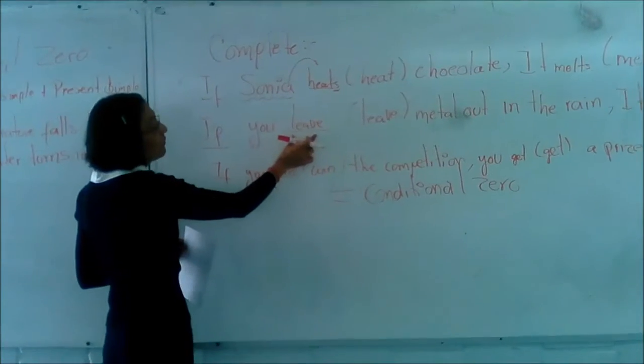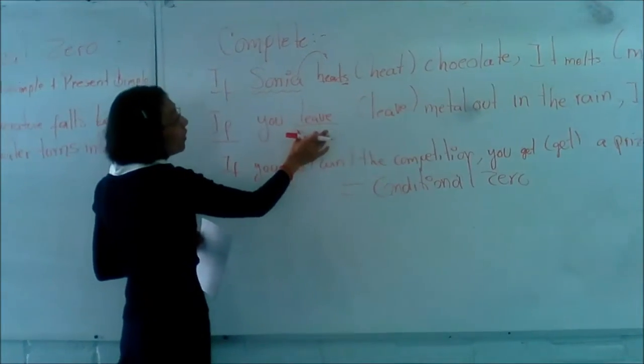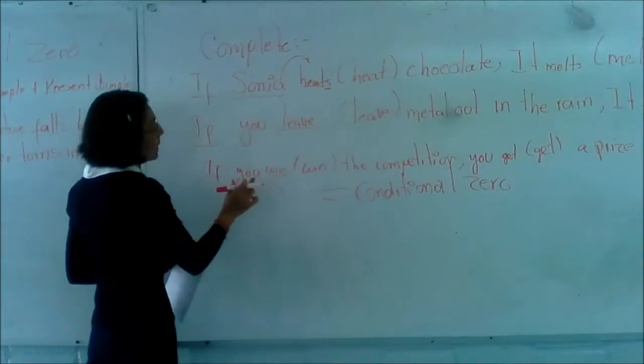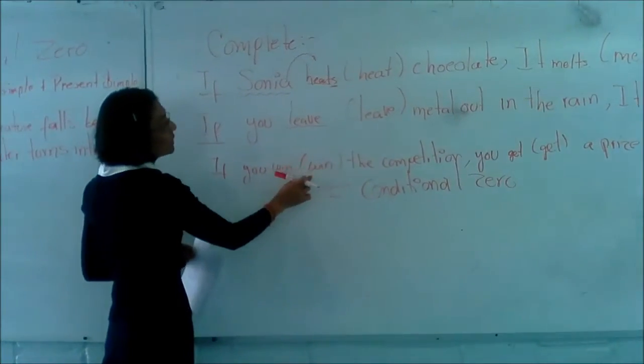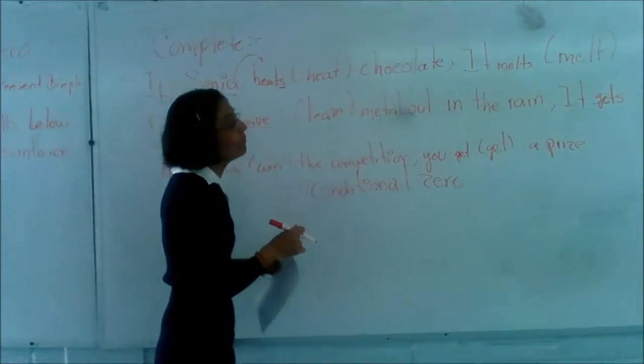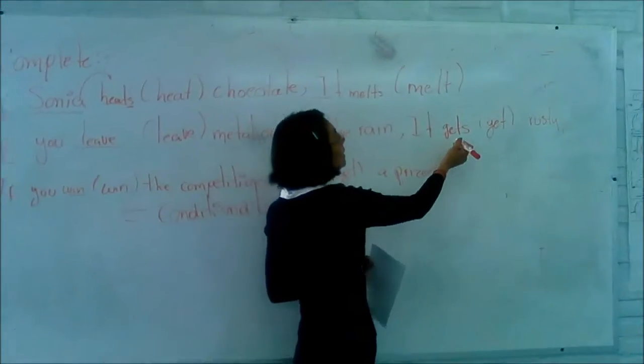With 'you,' the verb stays the same: you win. It's always the same, but in third person, we have to add an 's' at the end.